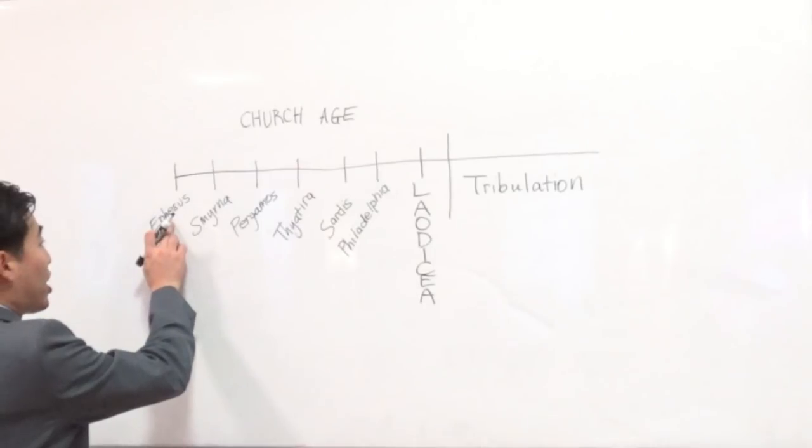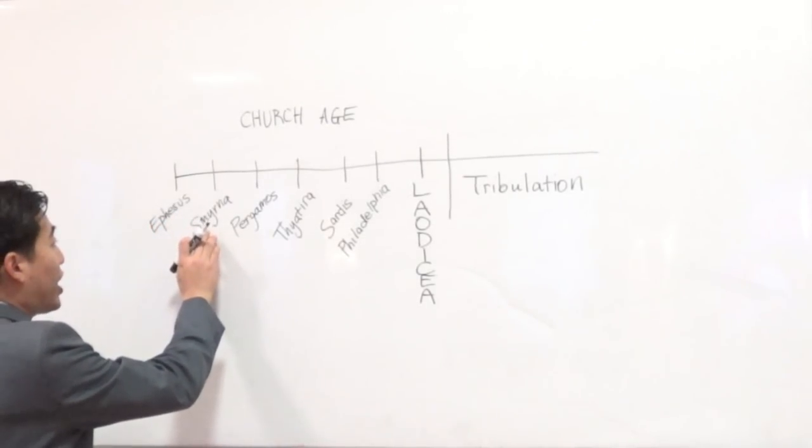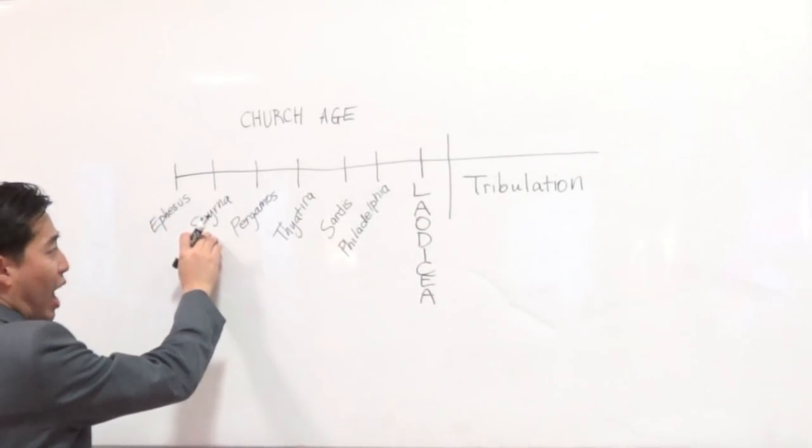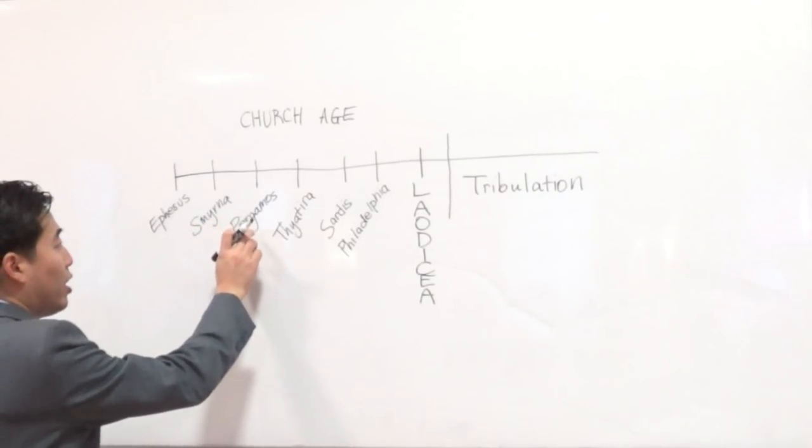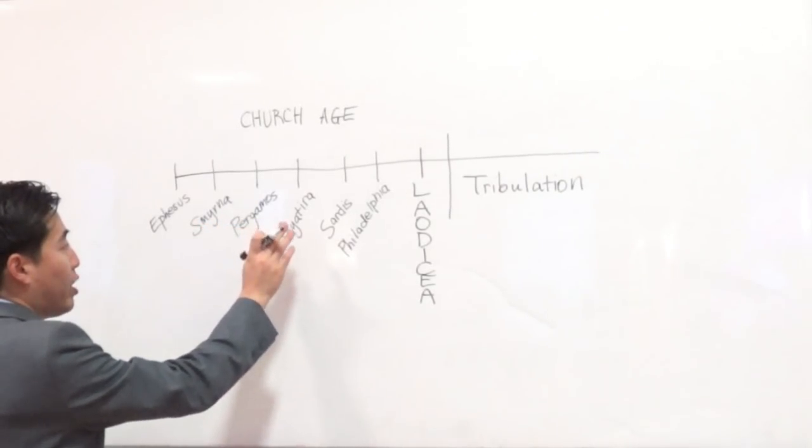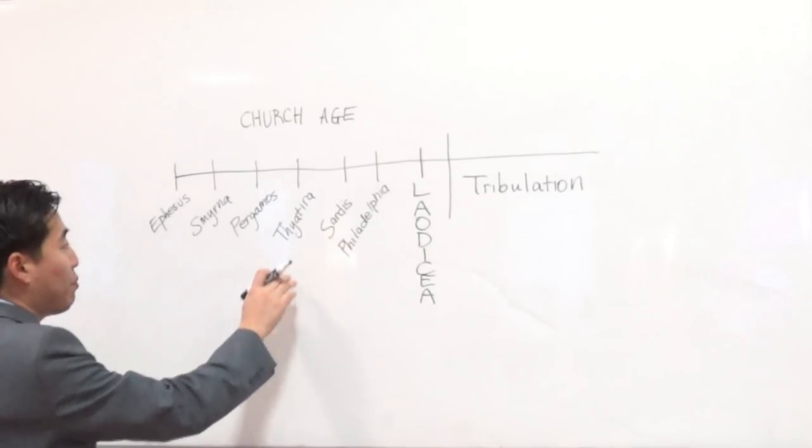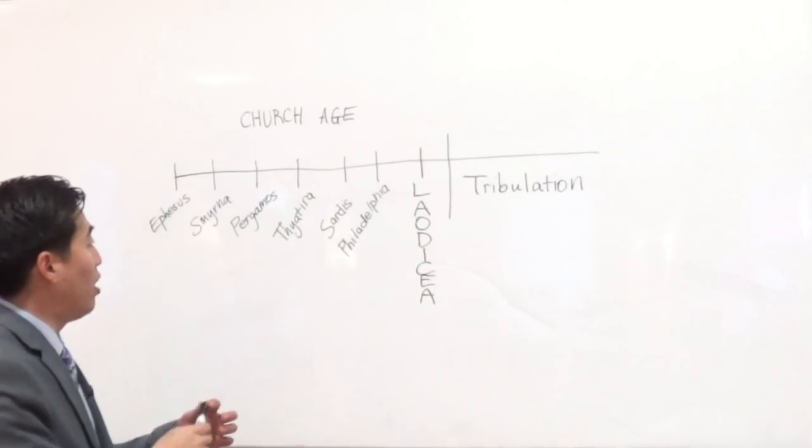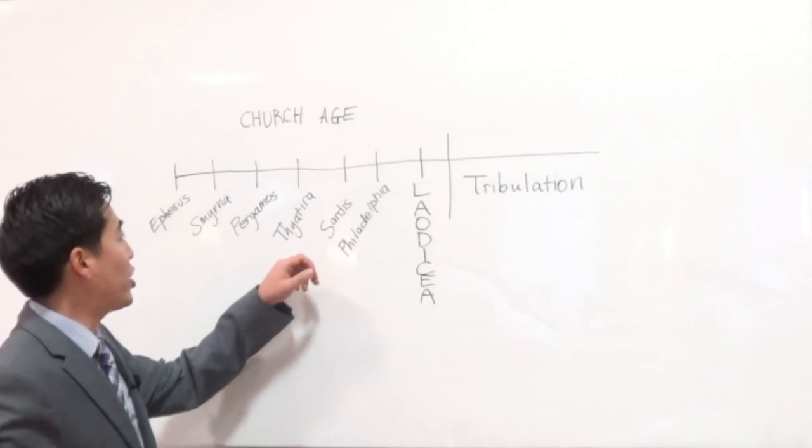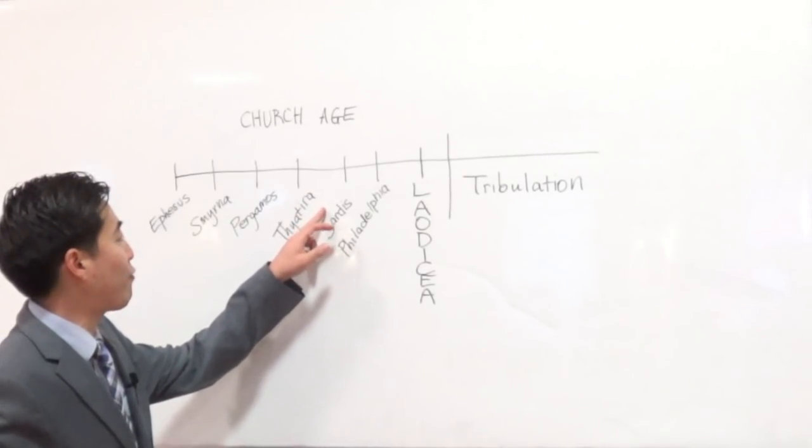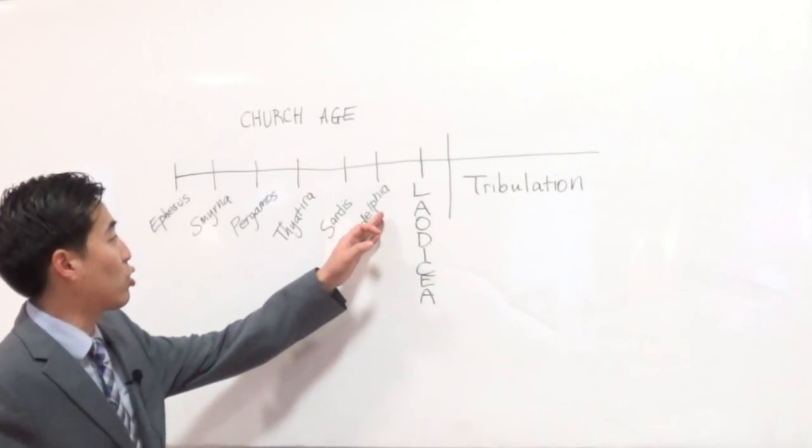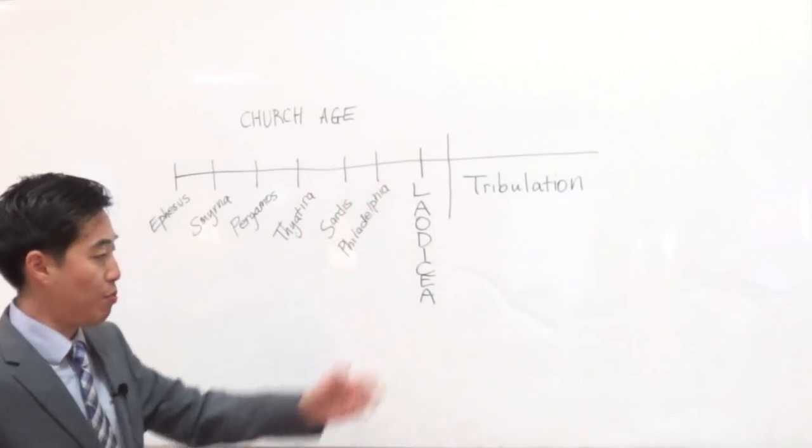Right here, we covered the first centuries. Then this covers the latter earlier centuries. Over here, it covers the time of Constantine. Then it covers the medieval era and early Reformation. This one is covering the Reformation era. This one is the Great Awakening era. This one is the modern era.